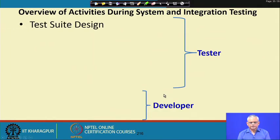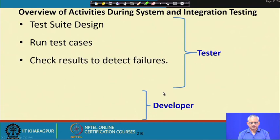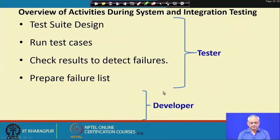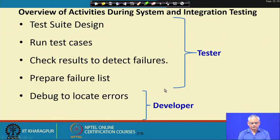Looking at the testing activities: test case design, running test cases, checking results to detect failures, and preparing the failure list or test report are done by the tester, whereas the developer debugs and corrects the error.